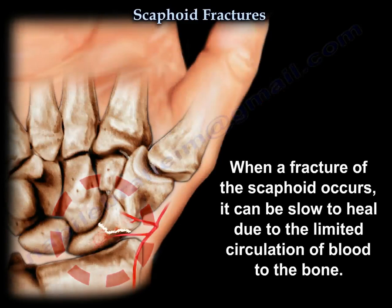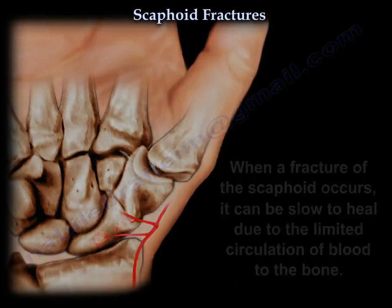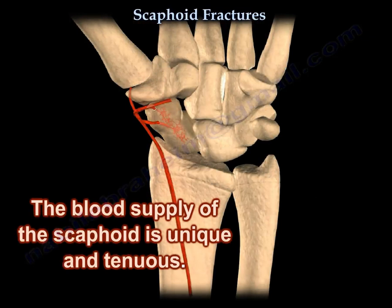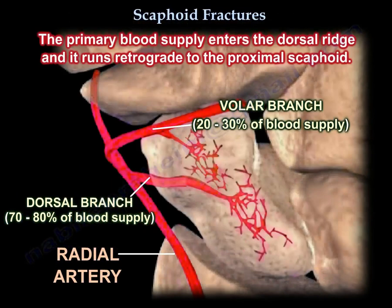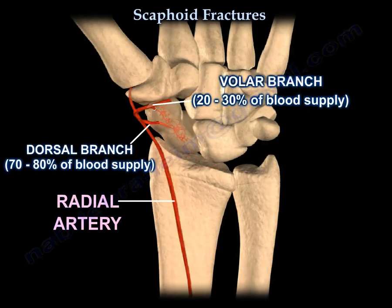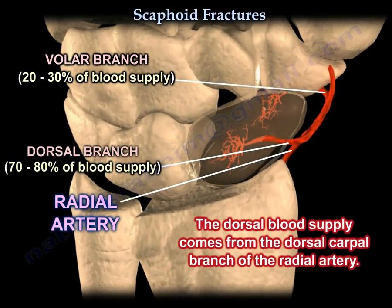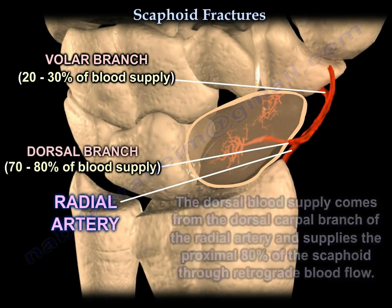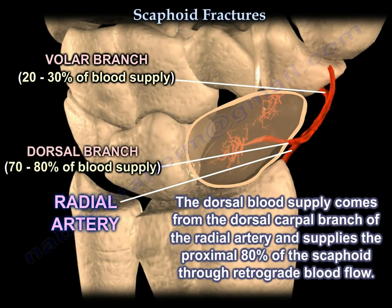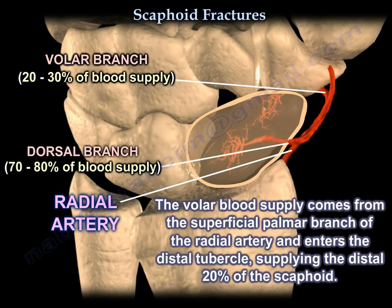The blood supply. When a fracture of the scaphoid occurs, it can be slow to heal due to the limited circulation of blood to the bone. The blood supply of the scaphoid is unique and tenuous. The primary blood supply enters the dorsal ridge and runs retrograde to the proximal scaphoid. The dorsal blood supply comes from the dorsal carpal branch of the radial artery and supplies the proximal 80% of the scaphoid via retrograde blood flow. The volar blood supply comes from the superficial palmar branch of the radial artery, enters the distal tubercle, and supplies the distal 20% of the scaphoid.